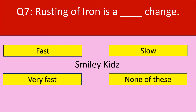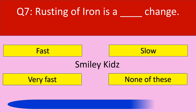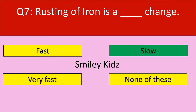Rusting of iron is a dash change. Options: fast, slow, very fast, none of these. Your time starts now. Your time is up and the correct answer is slow. Rusting of iron is a slow change.